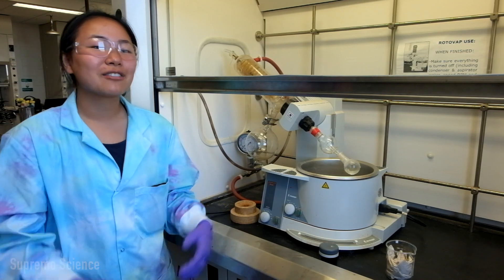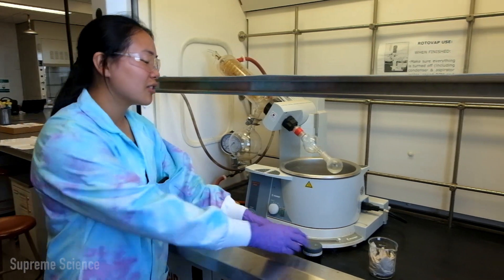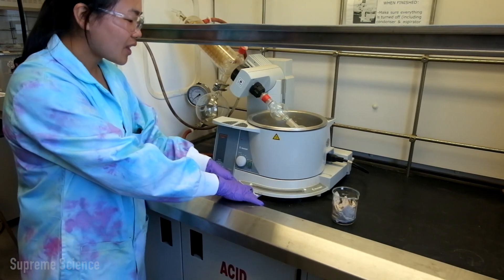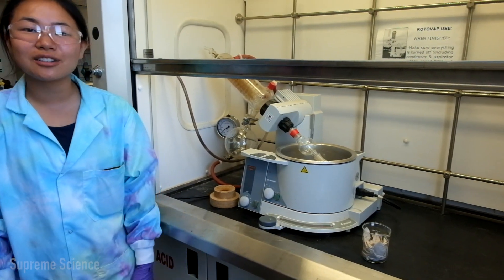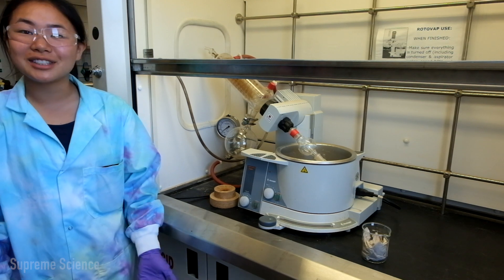So once you have your round bottom flask rotating, you can lower it into the hot water bath and increase the speed of the rotation. But today, because we're using a low boiling point solvent, we don't need to turn the heat on.